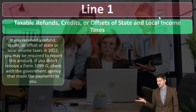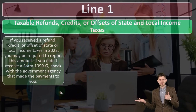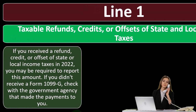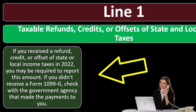Line one: taxable refunds, credits, or offsets of state and local income taxes. If you received a refund, credit, or offset of state or local income taxes in 2022, you may be required to report this amount. If you don't receive a Form 1099-G, check with the government agency that made the payment to you.